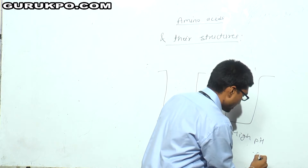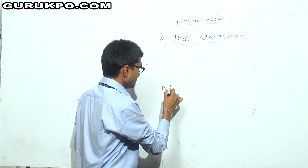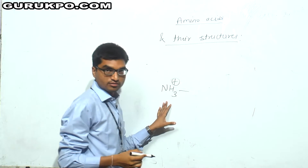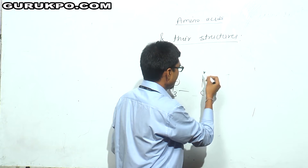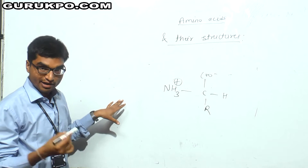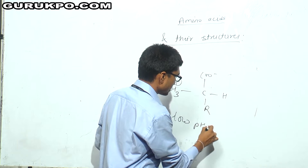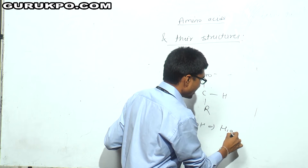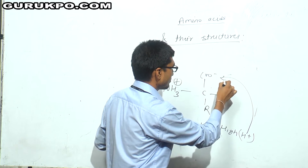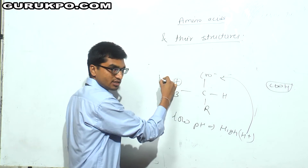If I draw the structure of amino acid, I find NH3⁺ in the positive form and COO⁻ in the negative form, along with H and R. In low pH concentration, there will be high H⁺ ion concentration, so this H⁺ will form a COOH group. That is why the protein will be having positive charge.